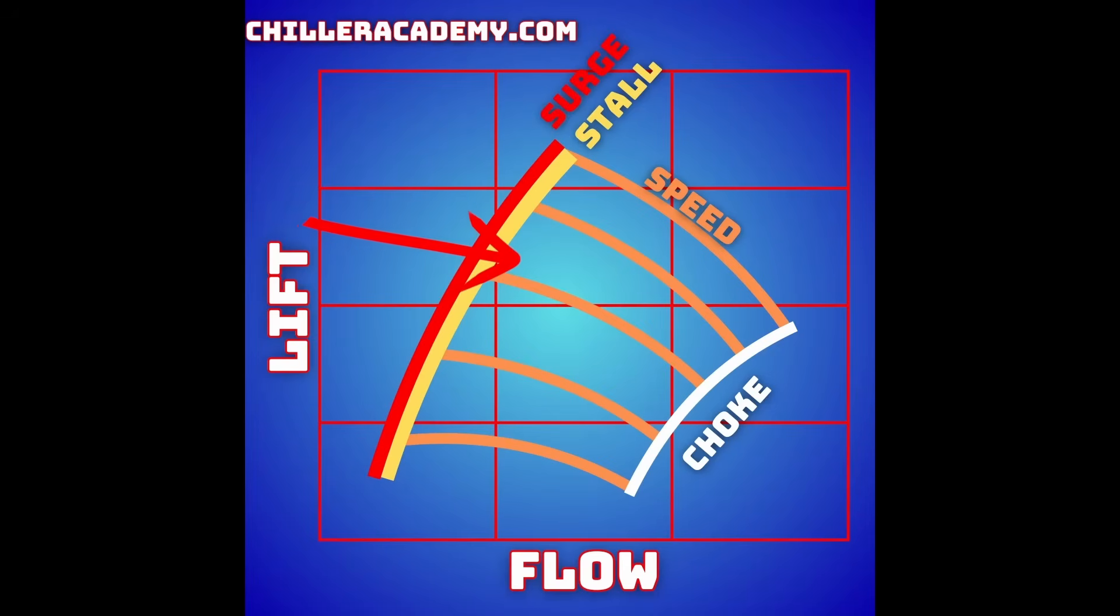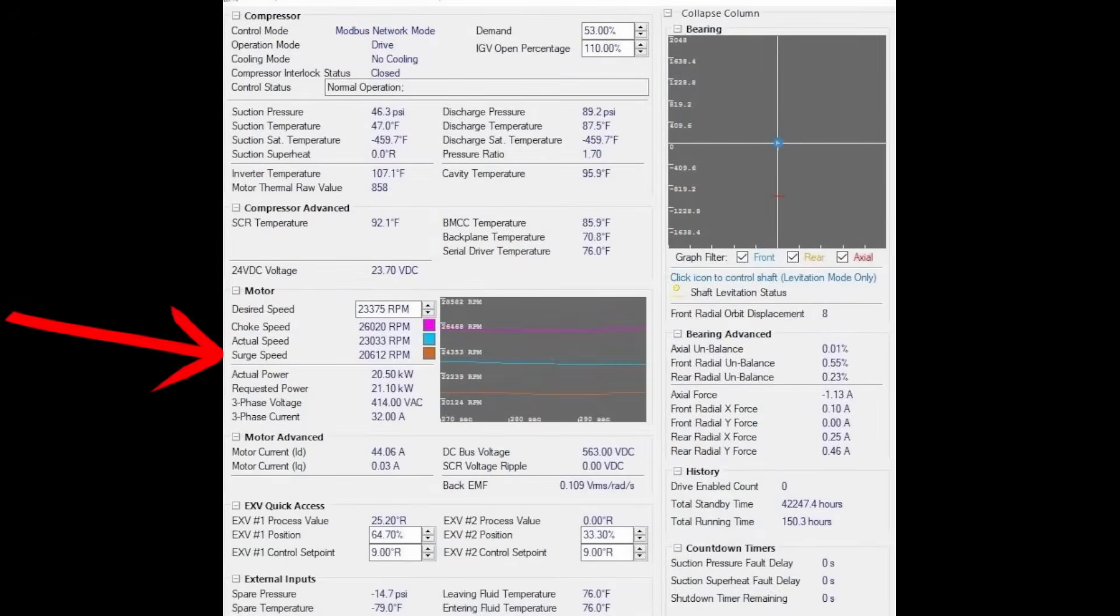I'm trying to articulate it better. I'm not as proficient at articulating choke as I am some of these others. With choke, essentially, I think of it as the compressor or the impeller is getting starved. It's trying to flow more than it can based off of the lift conditions, which creates its own type of stability issue.